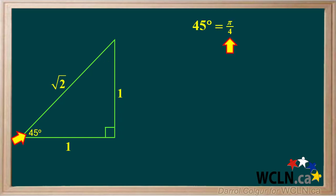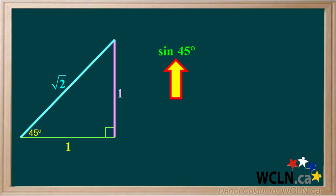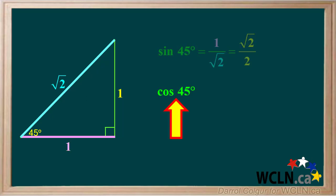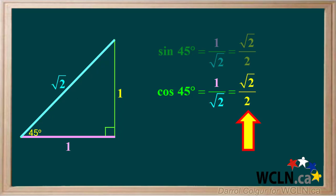We'll take one of the 45-degree angles. 45 degrees is 45 times pi over 180, or pi over 4 radians. The sine of 45 degrees is the opposite side over the hypotenuse, which is 1 over the square root of 2. Rationalizing the denominator gives us root 2 over 2 as the exact sine of 45 degrees. The cosine of 45 degrees is the adjacent side over the hypotenuse, which is 1 over root 2, and rationalizing the denominator gives us root 2 over 2.